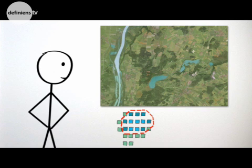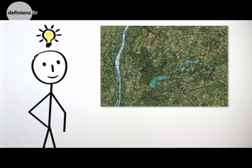Humans aggregate similar things in an image into groups and distinguish different shapes and spatial relations. Definiens image segmentation applies the same technique automatically.